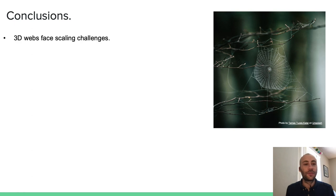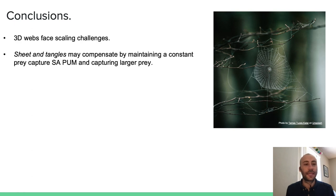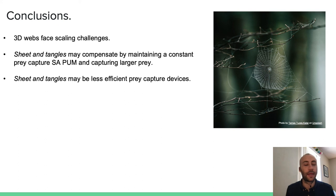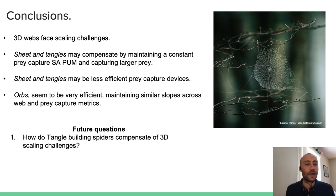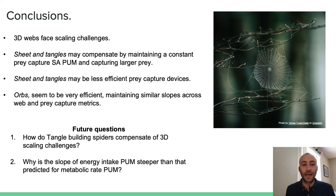In conclusion, we show that three-dimensional webs do indeed face scaling challenges, and that sheet-and-tangles in particular may compensate by maintaining a constant prey capture surface area per unit mass and capturing larger prey. However, sheet-and-tangles may be less efficient prey capture devices, especially compared with orbs, which seem to be very efficient, maintaining similar slopes across both web and prey capture metrics. In the future, we're interested in how tangle-building spiders compensate for three-dimensional scaling challenges, and why the slope of energy intake per unit mass is steeper than that predicted for metabolic rate per unit mass.